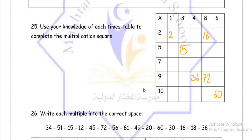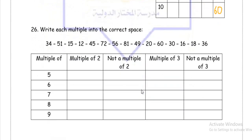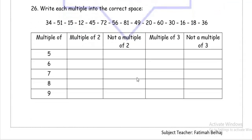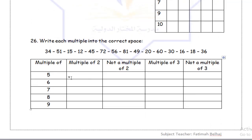Moving on to question 26: write each multiple into the correct space. Let's take a look at the numbers, starting from 34. Is 34 a multiple of 5, 6, 7, 8, or 9? No — we don't see 34 within times tables 5, 6, 7, 8, or 9. Let's move on to 51. Is 51 a multiple of 5, 6, 7, 8, or 9? No.